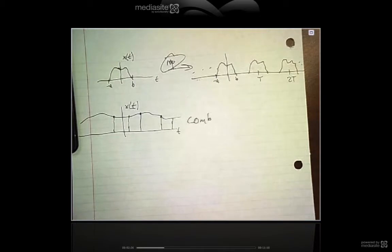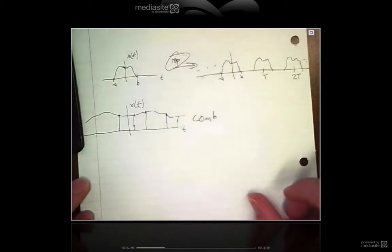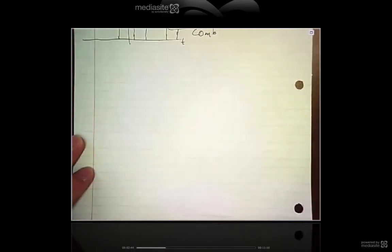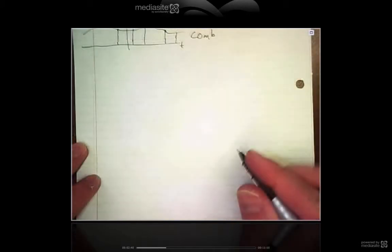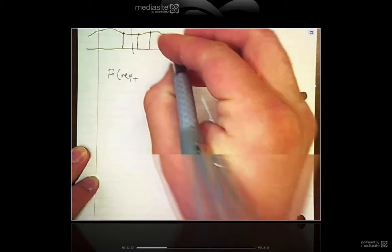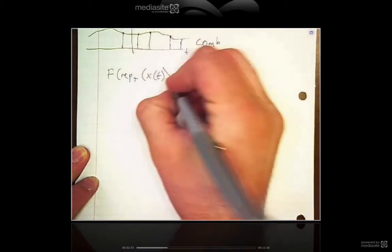Now I want to move into how you find the Fourier transform of a rep and a comb. When you find the Fourier transform of a rep, we'll start with that. The rep with period T of X of T, your original signal.